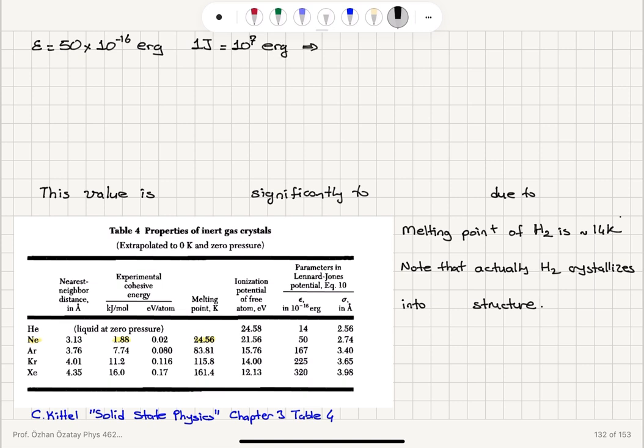Therefore, ε = 50×10⁻¹⁶ × 10⁻⁷ = 50×10⁻²³ joules. Now for one mole,